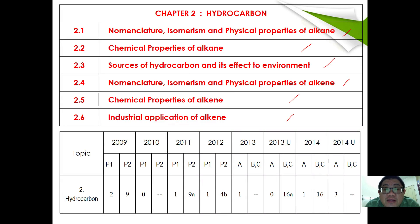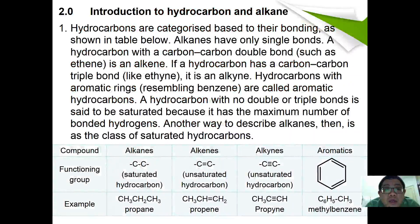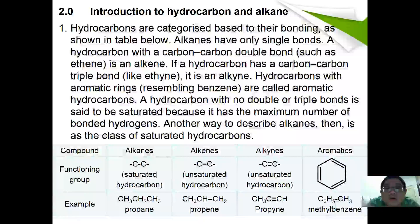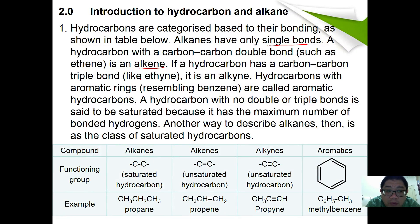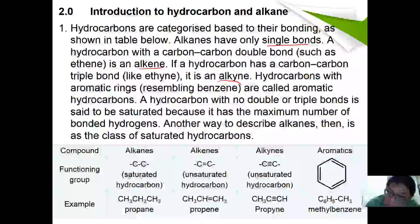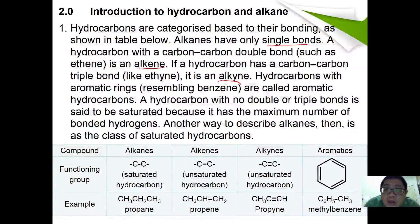With that introduction, let's enter the lesson. Hydrocarbons are categorized based on their bonding as shown in the table. Alkane has only single bonds. A hydrocarbon with a carbon-carbon double bond is an alkene. If it has a triple bond then it is an alkyne. A hydrocarbon with aromatic compounds is called aromatic hydrocarbon.